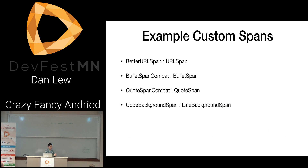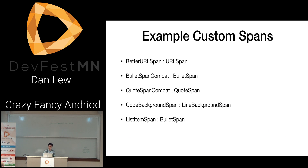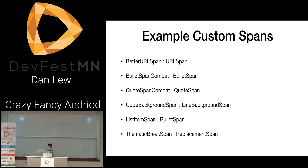We created a code background span by extending LineBackgroundSpan — that's an interface with no behavior by default, so when copied nothing happens. We created a list item span to handle not just unordered lists but also numbered lists that are aligned — turns out that's very complicated to align those numbers, the web just does it for you magically. Our solution isn't really portable since those numbers are drawn by me rather than being actual text, so it falls back on BulletSpan. The thematic breaks use replacement span as I showed.